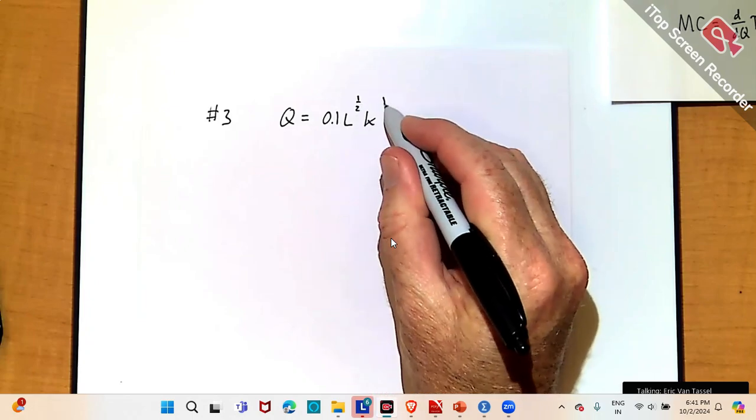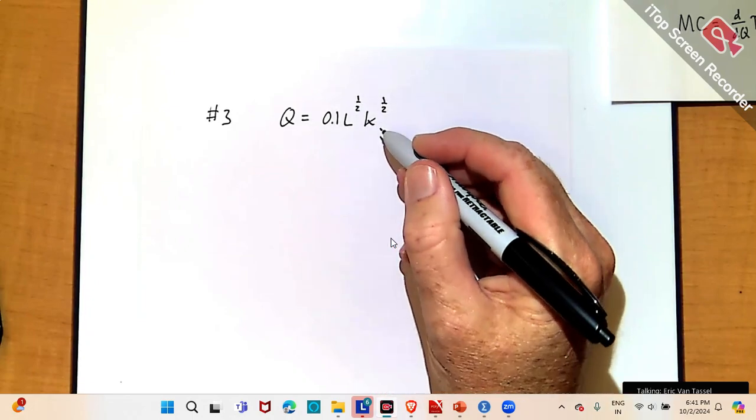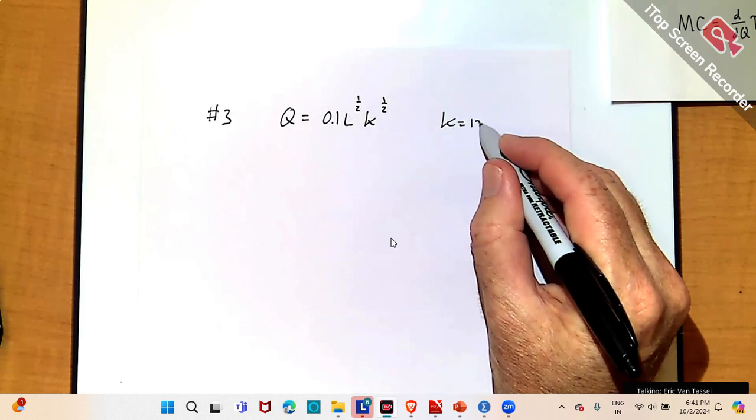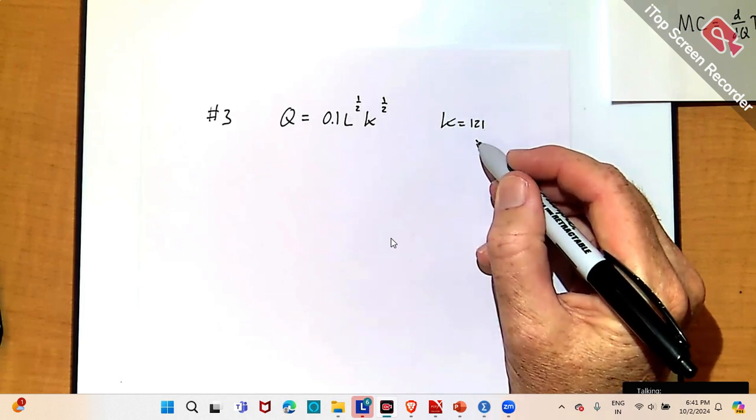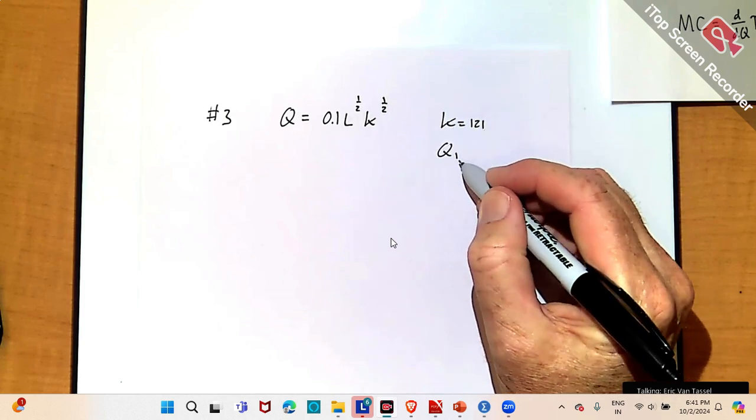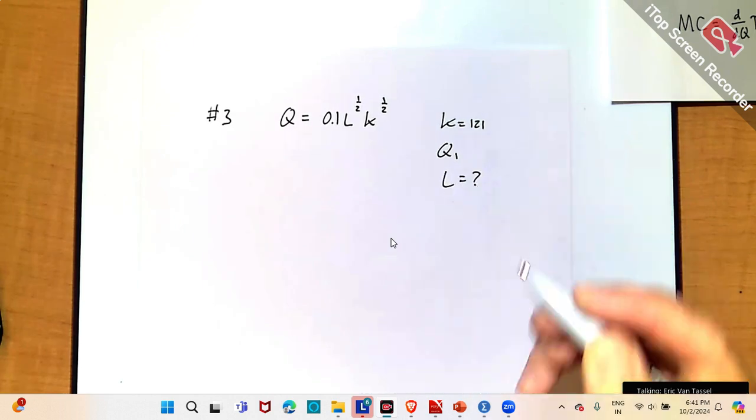Half K to the one half, right? On the list. K is 121. Target output is Q1. And I'm trying to find conditional factor demand for labor.